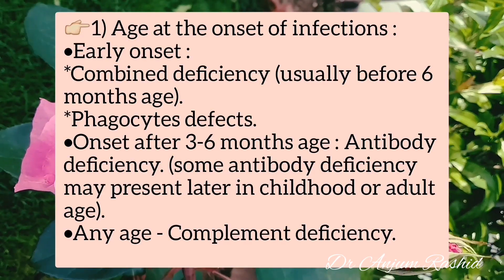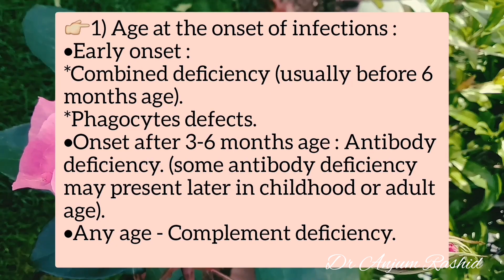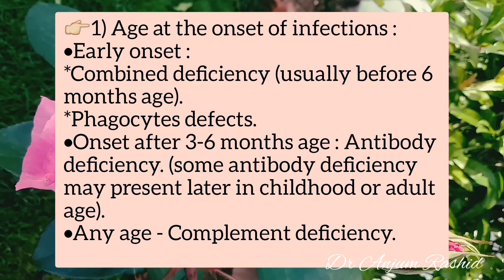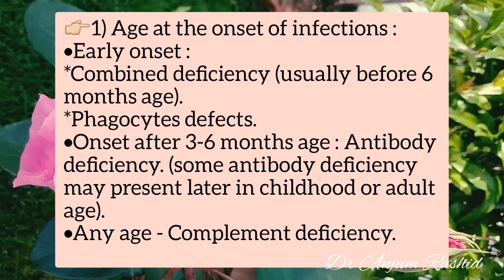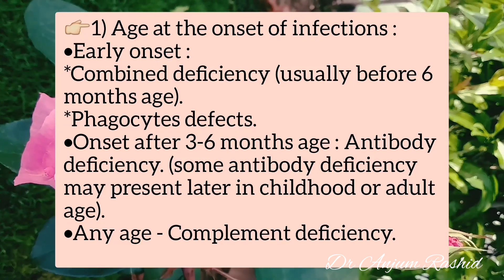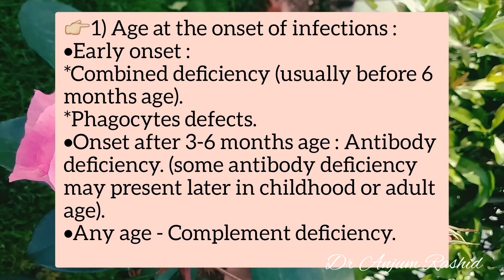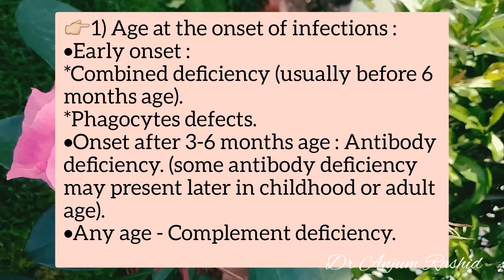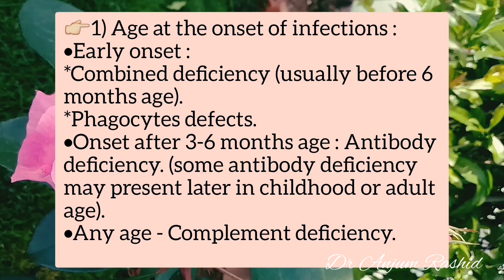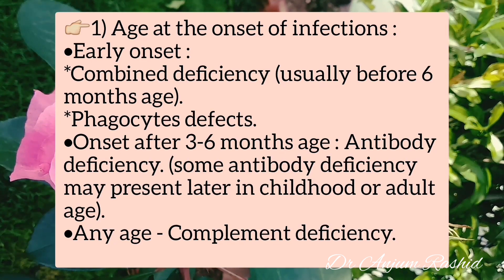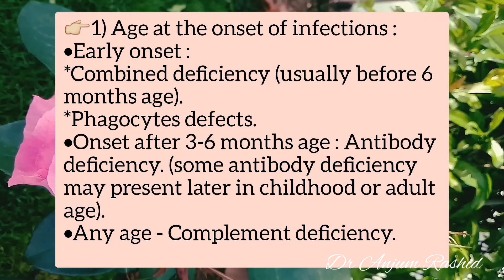The first clue is age at onset of infection. Combined deficiency has early onset, usually before six months of age. Phagocytic defects also present early. Antibody deficiency onset is after three to six months of age when maternal antibodies decline, though some may present later in childhood or adulthood. Complement deficiency can present at any age.